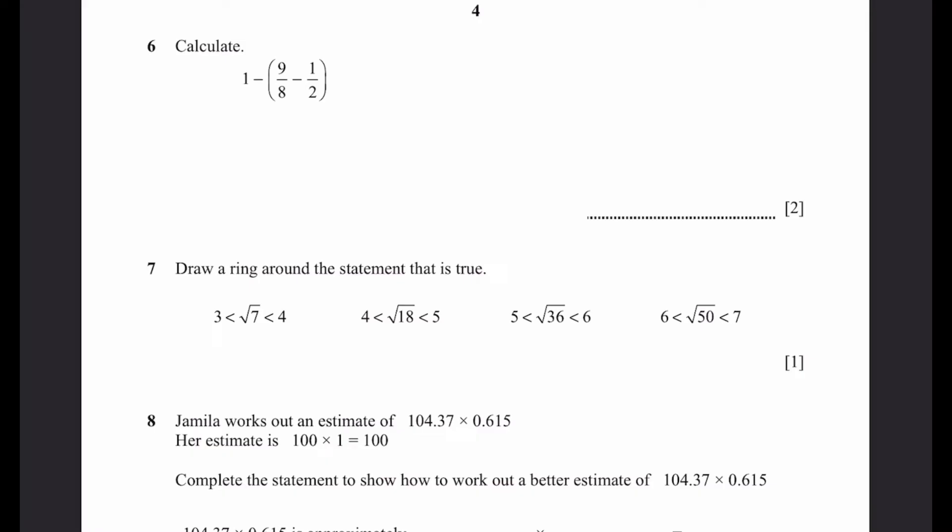Question 6. Calculate 1 minus 9 by 8 minus 1 by 2 whole parenthesis. So we have to calculate the one inside the parenthesis first. That's 1 minus 9 by 8 minus 4 by 8. To do the calculation in the parenthesis, that's 1 minus 5 by 8, which is simply 3 by 8. That's the answer.